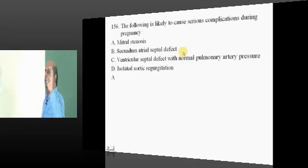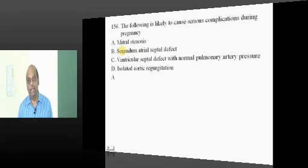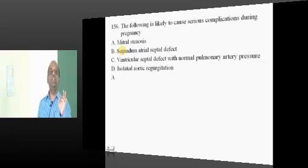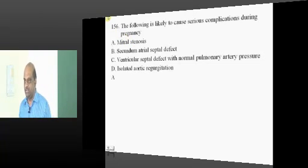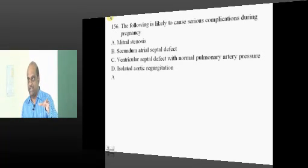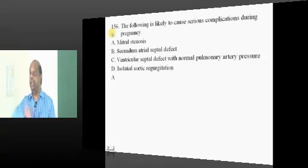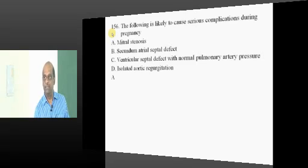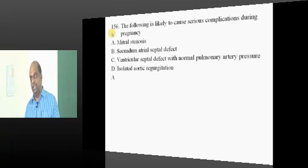What is the rule in valvular heart disease? All stenotic valvular heart diseases will worsen with pregnancy. All regurgitant valvular heart diseases will improve. In pregnancy, high progesterone relaxes smooth muscles of vessels, leading to vasodilation and decreased total peripheral resistance. This makes regurgitant lesions less regurgitant, but vasodilation also increases preload, pushing more blood through a narrow stenotic valve — hence stenotic lesions worsen and regurgitant lesions improve in pregnancy.